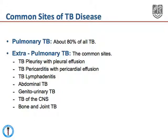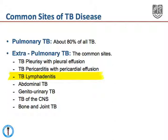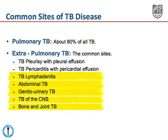Tuberculosis can affect any part of the body. However, 80% of all tuberculosis occurs in the lung. 20% occurs outside the lung, and the common sites include the pleural membrane — what is called TB pleurisy, usually presenting with a pleural effusion — the pericardium, what is called TB pericarditis, usually presenting with a pericardial effusion, hilar lymph nodes, abdominal TB, TB affecting the genitourinary system, the central nervous system, and bone and joint disease.